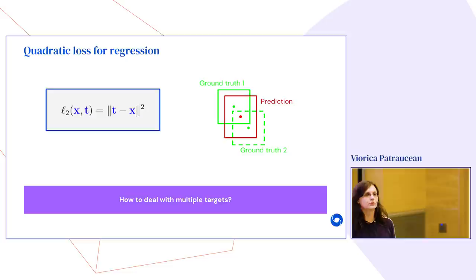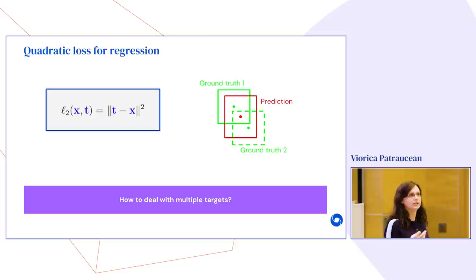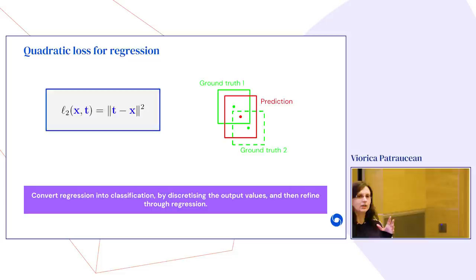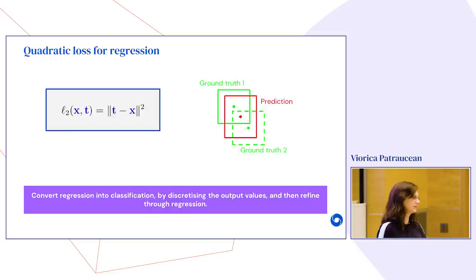We can do regression for bounding box prediction. But the problem is that we generally have more than one object in an image and we want to detect all of them. How do we know which ground truth bounding box to compare a prediction to? One approach is to take the nearest bounding box, but this gets messy quickly. A cleaner approach is to tackle the problem in two steps: first do a classification to roughly assign a prediction to a ground truth box, then refine around that rough prediction through regression.